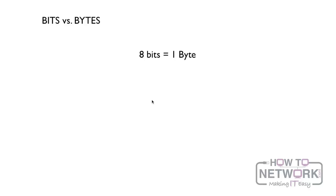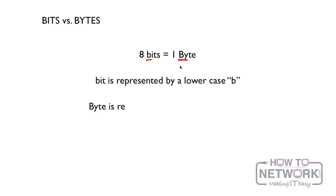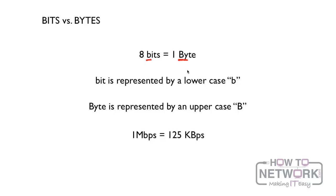You'll notice that bits are represented by a lowercase 'b,' whereas bytes are represented by an uppercase 'B.' One megabit per second is equivalent to 125 kilobytes per second.